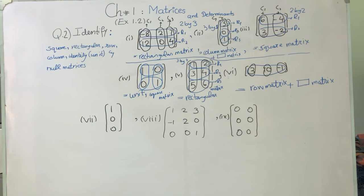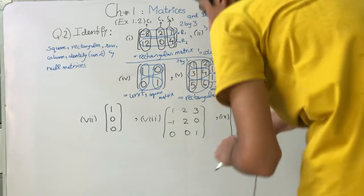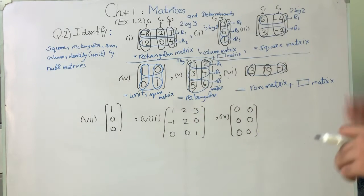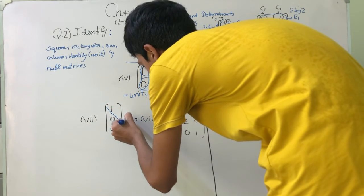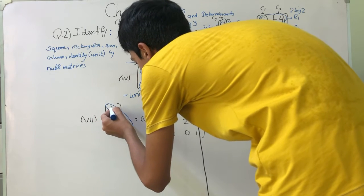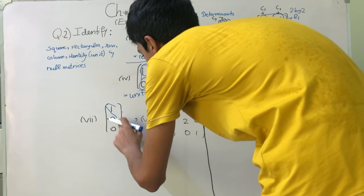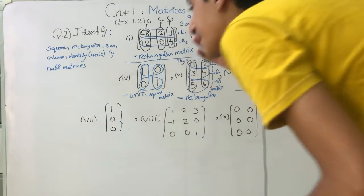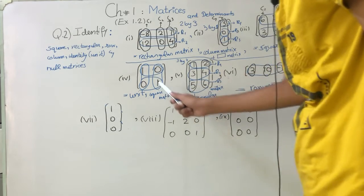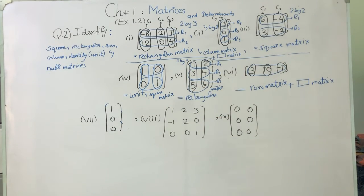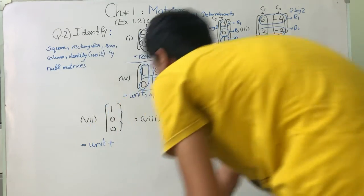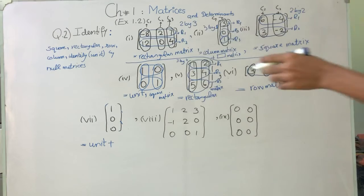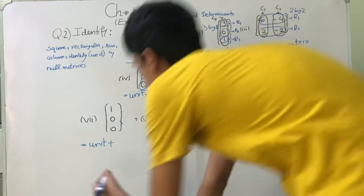We go to part number 7. The matrix is [1; 0; 0]. This has 3 rows and 1 column. The diagonal entry has 1 and the rest are 0, so we can call this a unit or identity-type matrix. Since the number of rows is not equal to the number of columns, it is also a rectangular matrix.